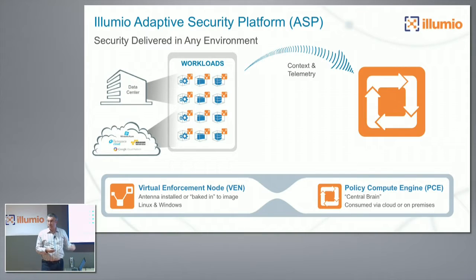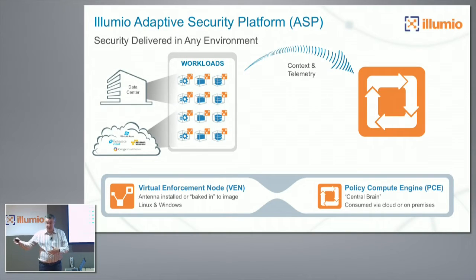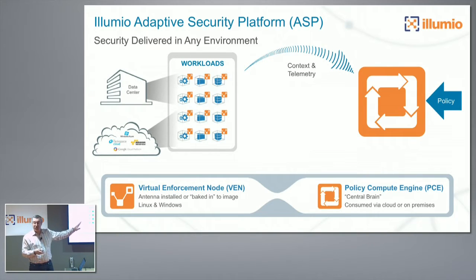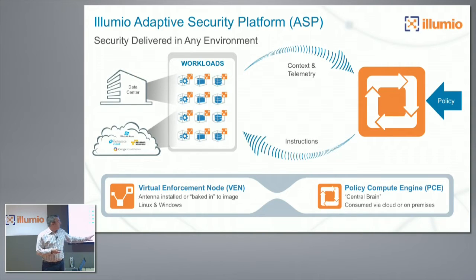Then you have the second component: the Policy Compute Engine, or PCE — the brain of the system. First it collects that information and provides visualizations that you'll see in a few minutes when Matt does the demos. Then, if someone wants to configure a segmentation policy, they describe it in a high-level language. We'll talk about the policy model in more detail because it's one of the innovations Illumio has brought to market — a natural language way that a developer might describe how an application works.